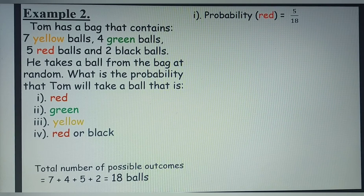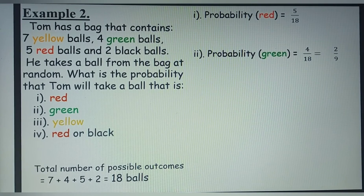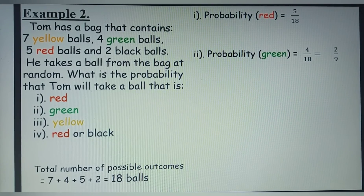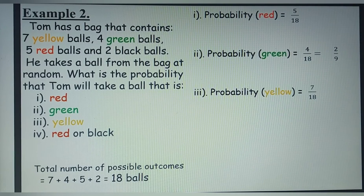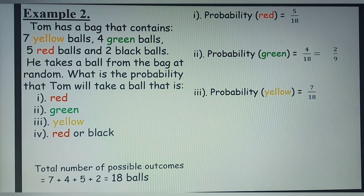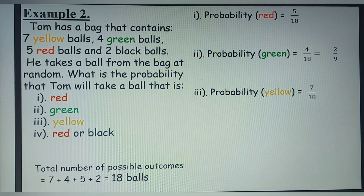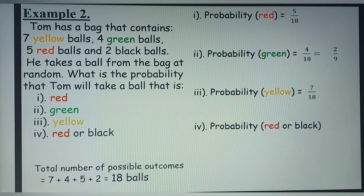The probability that Tom would take a green ball is 4 divided by 18, which simplifies to 2 over 9. The probability that Tom would take a yellow ball is 7 divided by 18. Finally, the probability that Tom would take a ball that is red or black is 5 plus 2 divided by 18, which gives you 7 over 18.